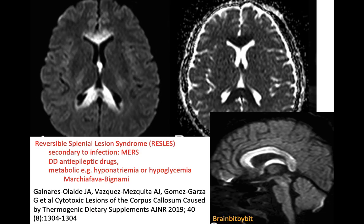MERS can also occur when there are electrolyte disturbances — for example, in patients who use thermogenic dietary supplements to lose weight, as these supplements promise to increase metabolism. There is also the term reversible splenial lesion syndrome, which is more of an umbrella term. MERS is more or less reserved for post-infectious cases, but you can also have similar patterns because of antiepileptic drugs, electrolyte disturbances, and alcohol use.